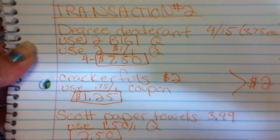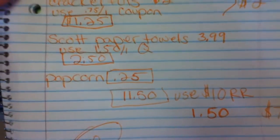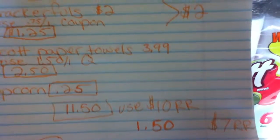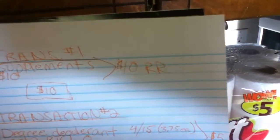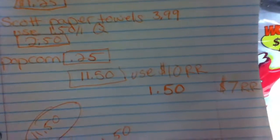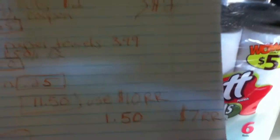All the totals of transaction number two came to $11.50, and then I used the $10 register rewards from transaction number one. Brought it to $1.50, and I came away with $7 register rewards.